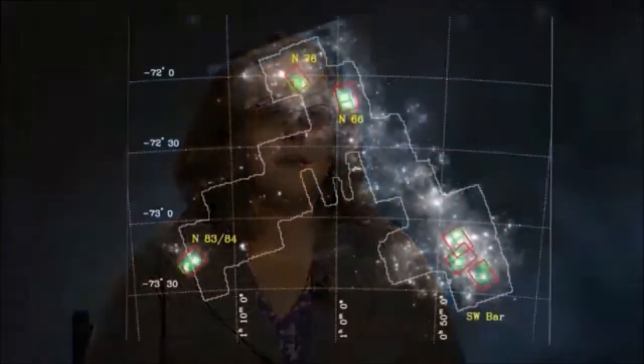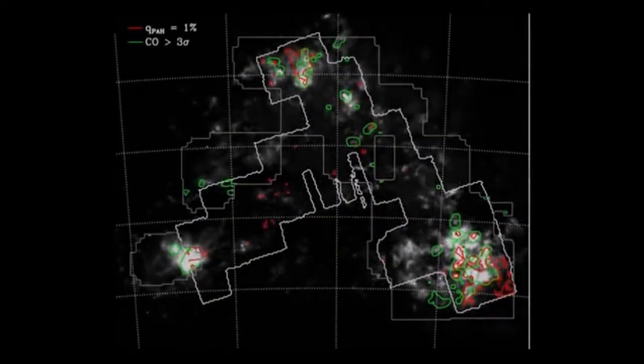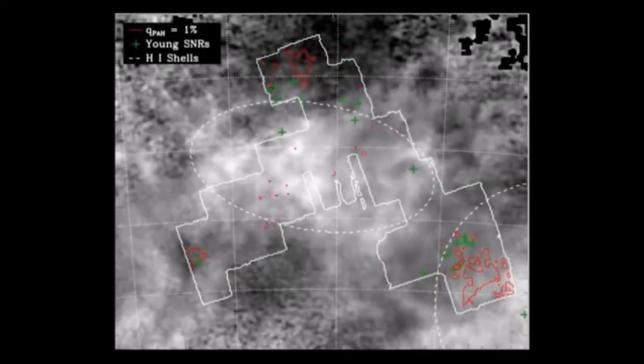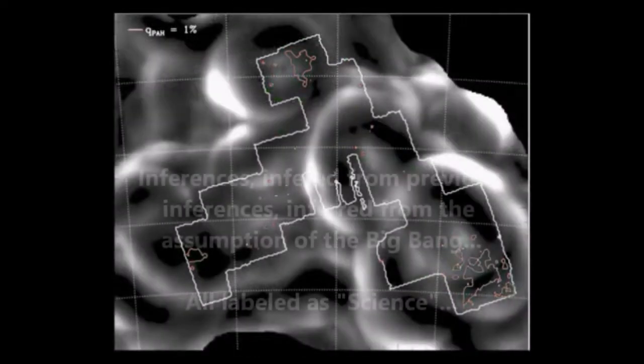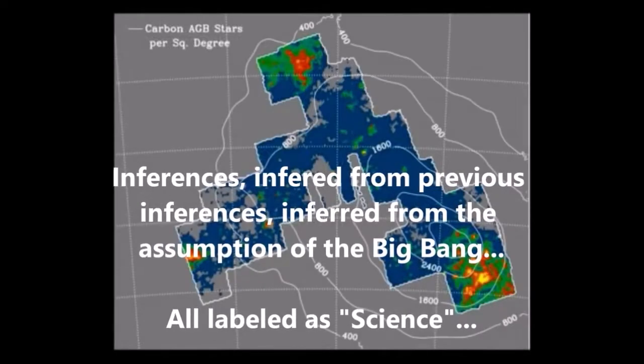So what I do is I make maps of nearby galaxies looking at the infrared light from dust, and I use that to infer how much dust there is and what it's made of and how it changes depending on where you're looking in a galaxy.